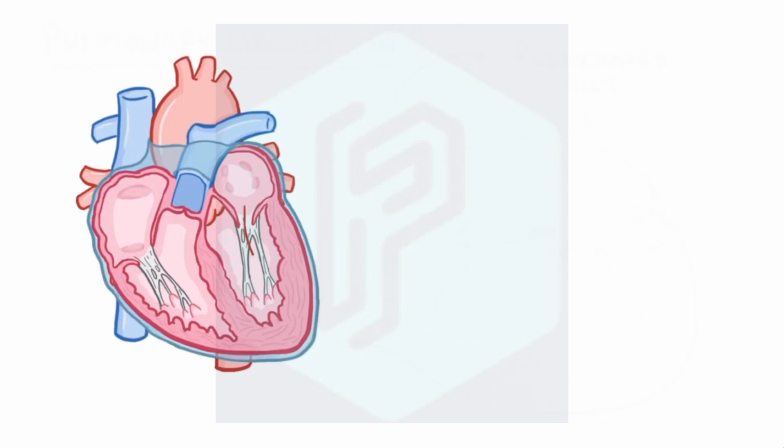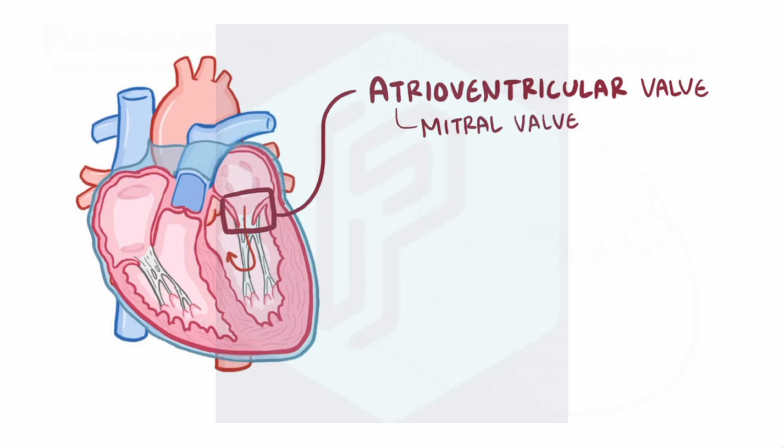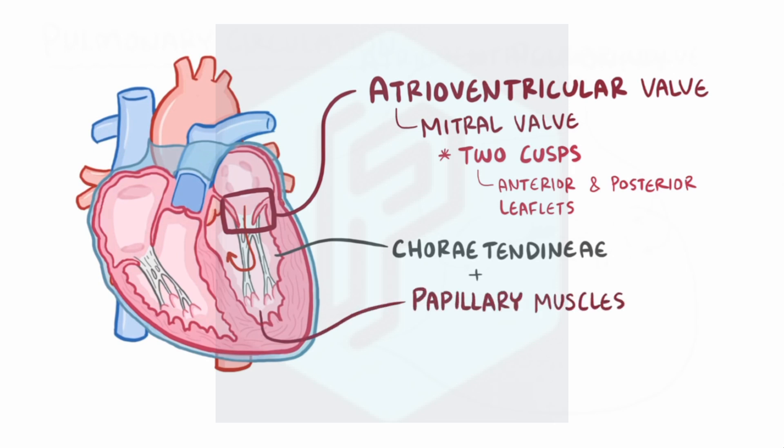After entering the left atrium, the blood goes through the second atrioventricular valve called the mitral valve into the left ventricle. The mitral valve only has two cusps or leaflets, one in front called the anterior leaflet that's a little smaller, and one behind it called the posterior leaflet. Both of these have chordae tendinae coming off of them that tether the valve to the papillary muscles in the left ventricle.